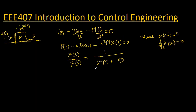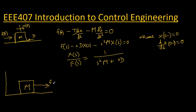Let's go to another example — the mass-spring-damper system. We have the same box on the ground with force f(t) applied, friction coefficient D acting backwards, and displacement x(t). Now we introduce a spring: the box is connected to the wall by a spring with spring constant k. So we have spring constant k, friction coefficient D, and mass m.